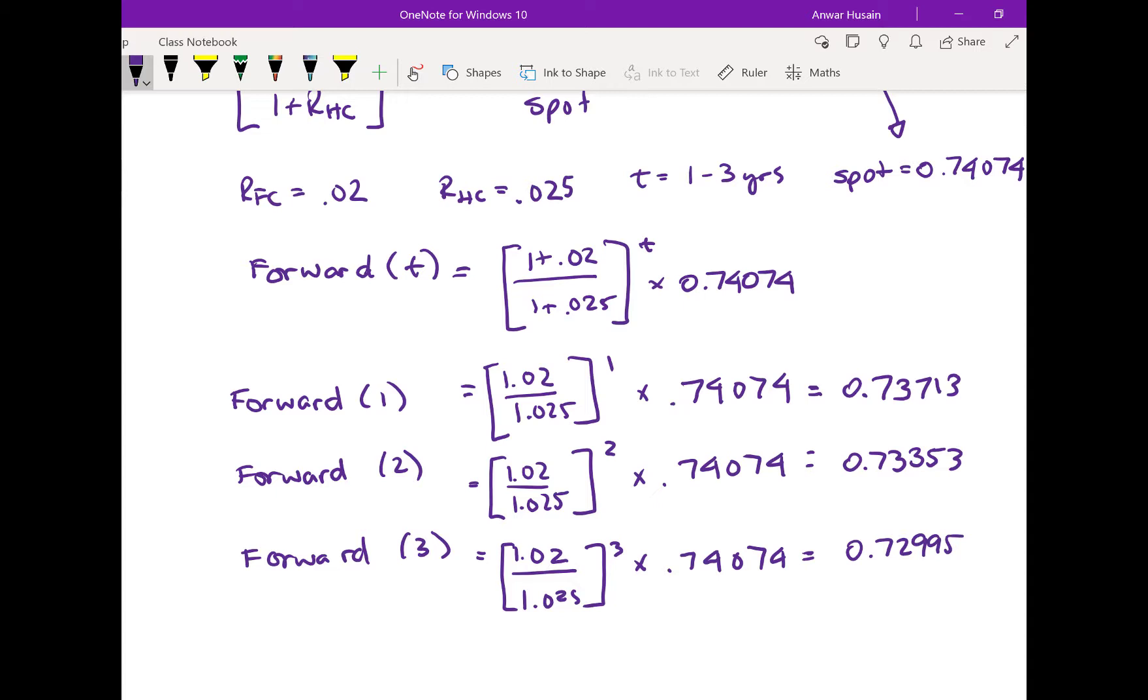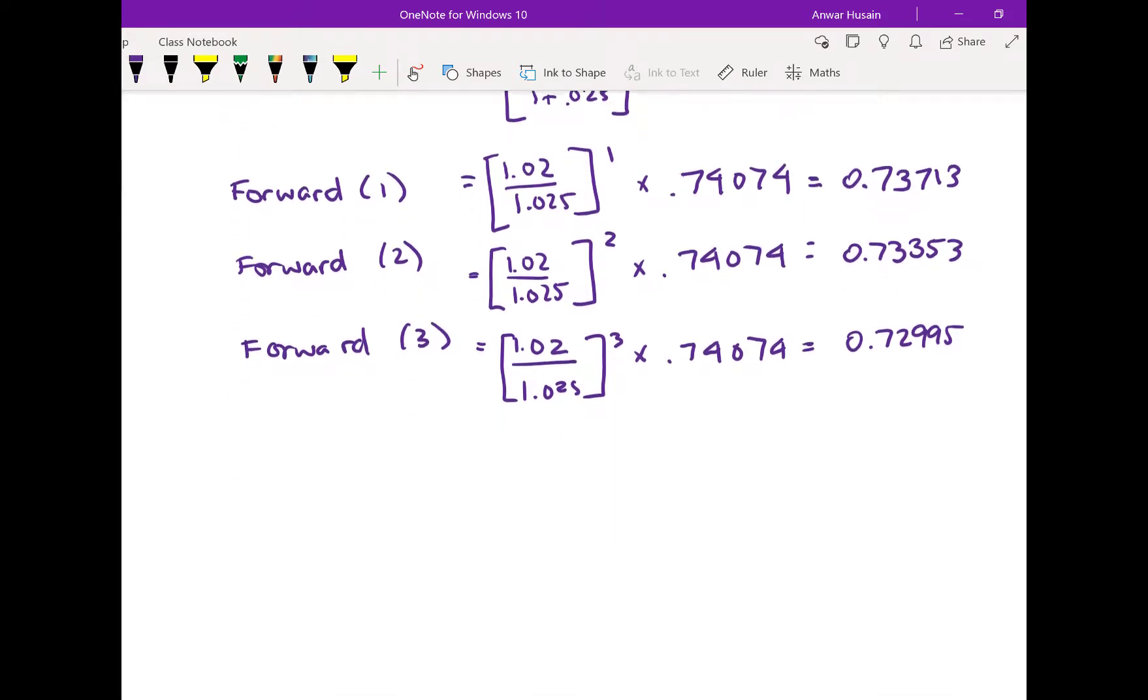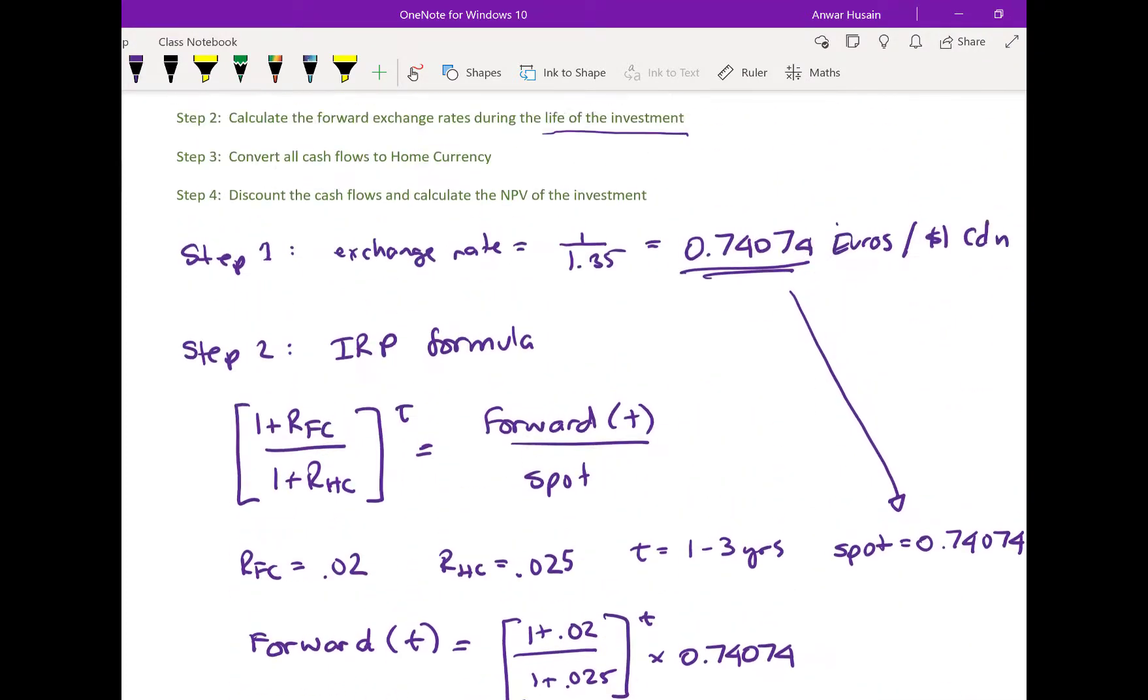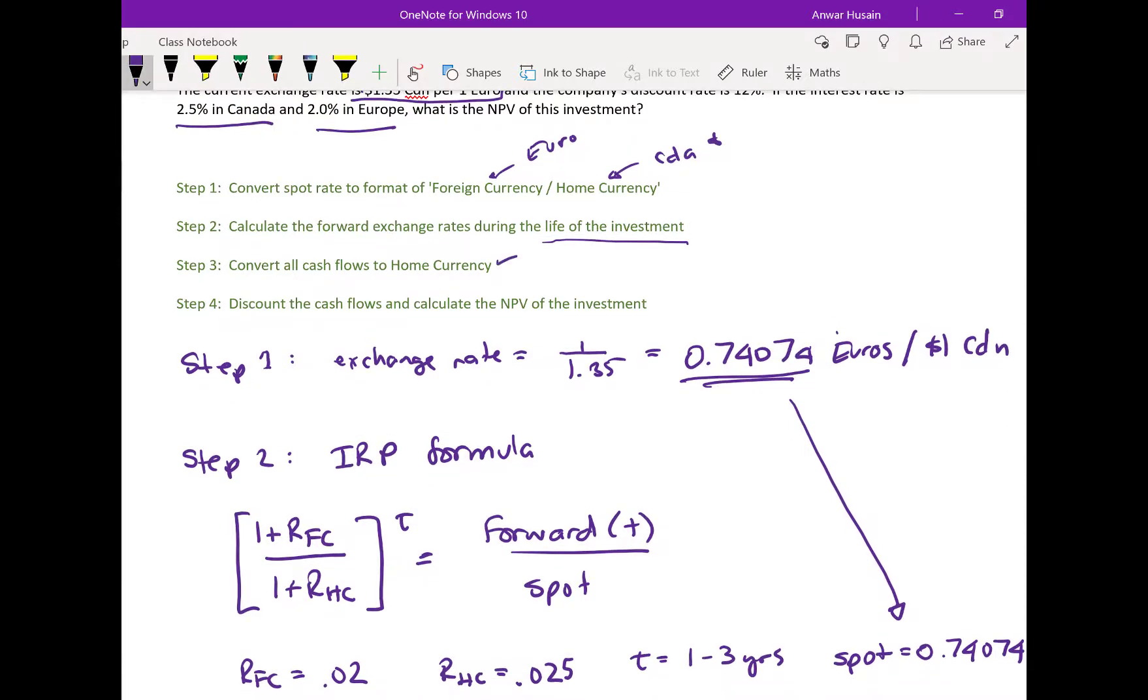So now, we have all of the forward rates during the life of the project. The next thing we need to do is create a cash flow. So what we want in step three is to convert the foreign cash flows to home currency.